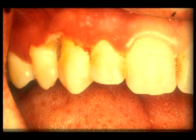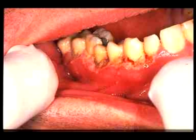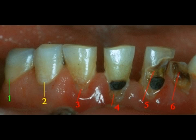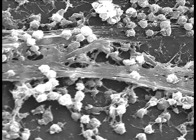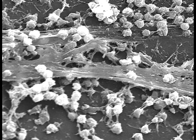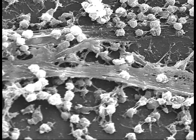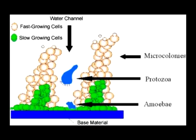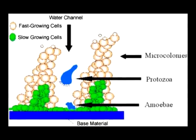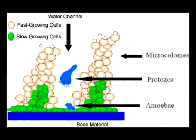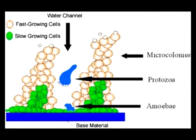It has been proven beyond doubt that chlorine dioxide removes biofilm from water systems and prevents it from forming when dosed at a continuous low level. Chlorine dioxide can penetrate the slime layers of bacteria because chlorine dioxide easily dissolves, even in hydrocarbons and emulsions.